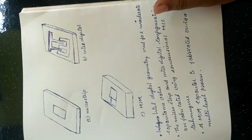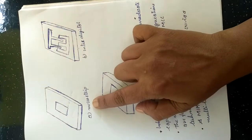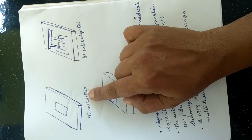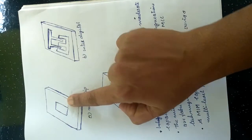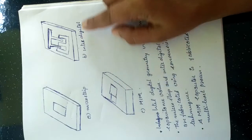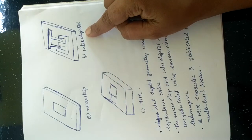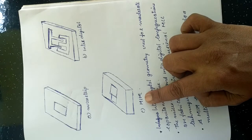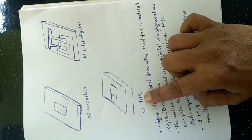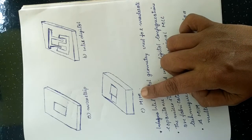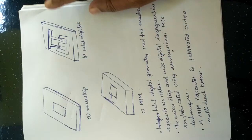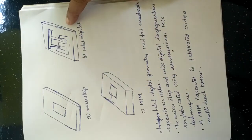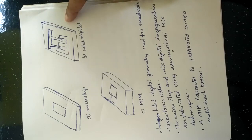These are the figures for the three configurations. The first figure represents the microstrip configuration, the second represents the interdigital structure, and the third represents the MIM (metal-insulator-metal) configuration. Within these three structures, the interdigital geometry is used for moderate capacitance values.